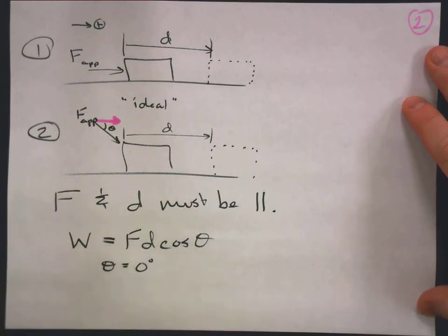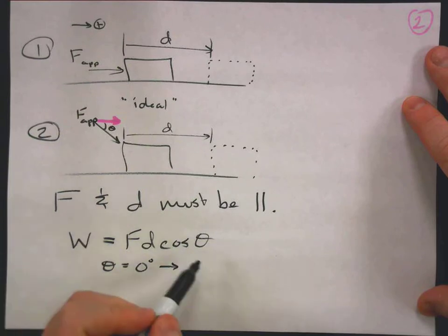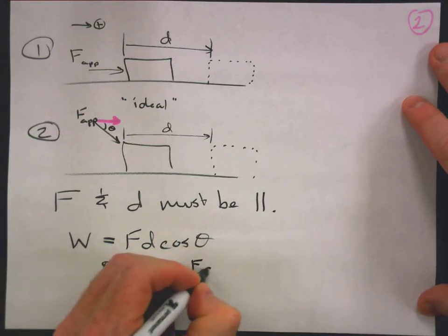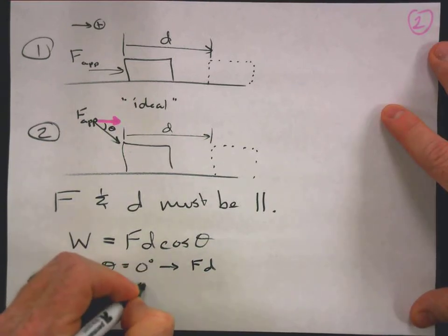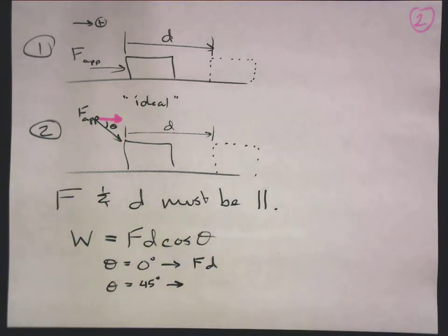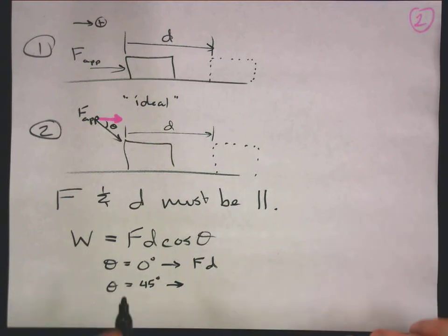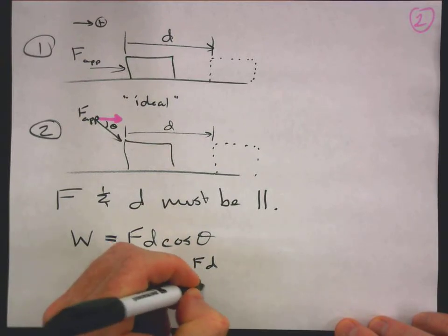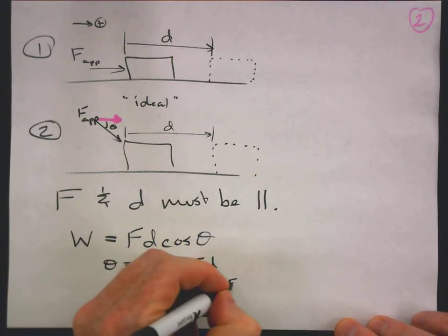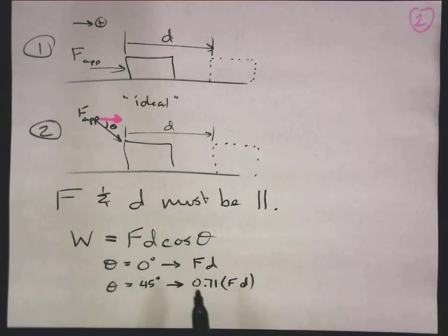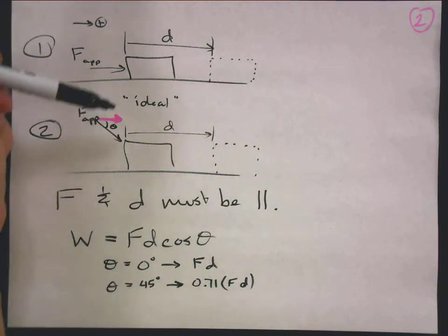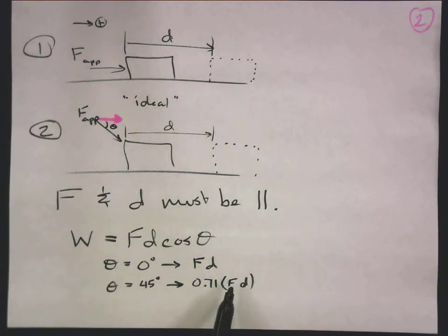Let's look at some angle examples. If theta is zero degrees, cosine of zero is one — you get the full force contributing to work. If theta is 45 degrees, cosine of 45° is about 0.71, so you get a component smaller than the actual force, and the work done ends up being less — you're effectively applying a smaller force in the direction of motion.